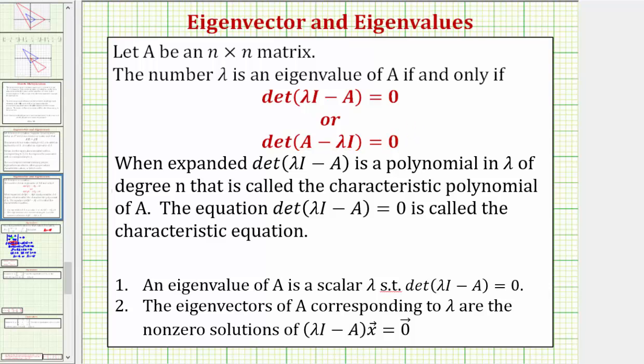When expanded, the determinant is a polynomial in lambda of degree n that is called the characteristic polynomial of A, and the entire equation is called the characteristic equation.